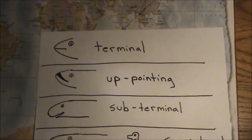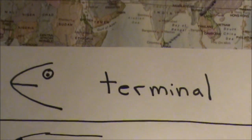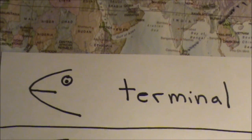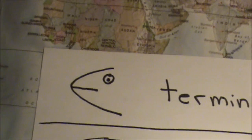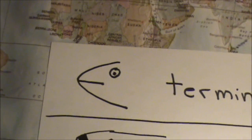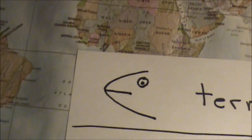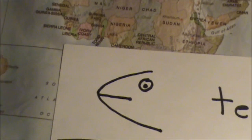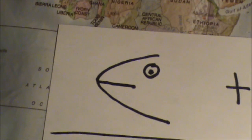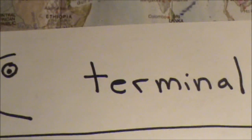So there are four types, the first one being terminal. Terminal mouths are located right at the front. Most fish with these mouths are predatory because this is made for hunting down and catching prey, since it's right at the front of the fish.